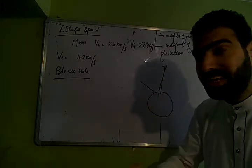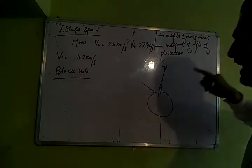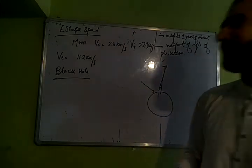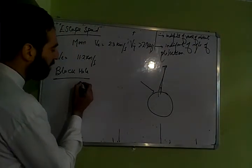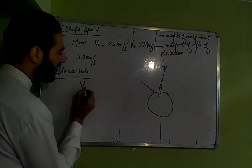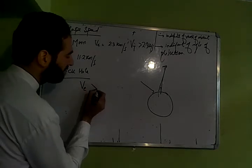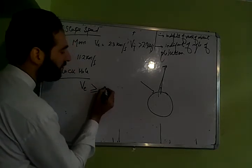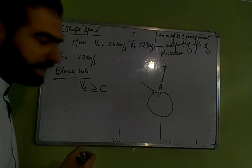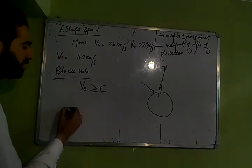To jab escape speed of light se bhi zyada hai to kya yeh light ko chhodega? The light will not escape from the gravitational field of the black hole. Is that clear? To kya likho ge aap yahan par condition kya hai black hole me? Kya hai escape speed that is greater or equal to the speed of light.